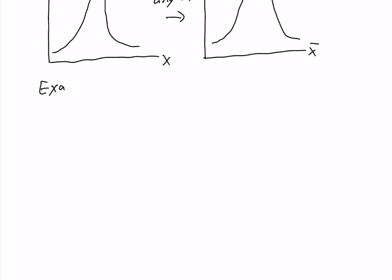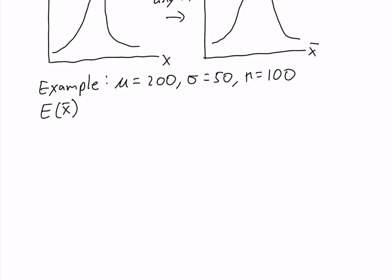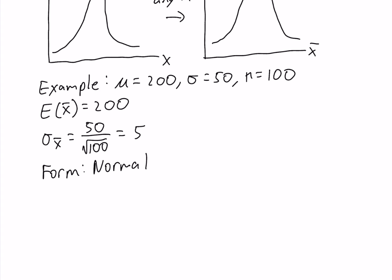Let's look at an example. Suppose we have a population with a mean of 200, a standard deviation of 50, and we're taking samples of size 100. The expected value of the sample mean equals the population mean, which is 200. The standard deviation of the sample mean — the standard error of the mean — equals the population standard deviation divided by the square root of the sample size: 50 over 10, which equals 5. The form of the sampling distribution is normal because the sample size is at least 30.